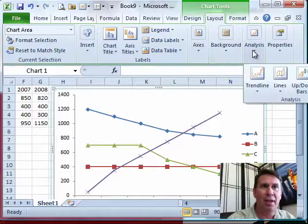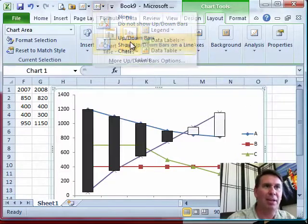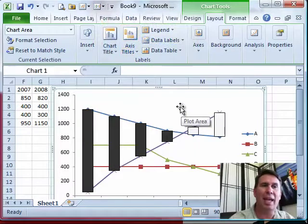Up-Down Bars are found under Analysis, Up-Down Bars. I added that to the Quick Access Toolbar. Up-Down Bars are kind of curious in that the Up-Down Bars always go from the first series in the chart to the last series in the chart.